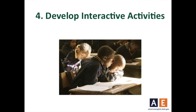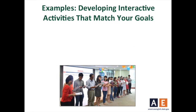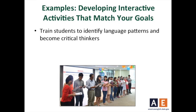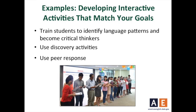Once you have your goals identified and sequenced, you can create interactive activities that match those goals. Developing interactive activities starts with training students to identify language patterns and become critical thinkers. You can do this through discovery activities — for example, asking students to examine writing in their field to decide if it includes both passive and active voice. You can also use peer response, which offers benefits such as increasing students' motivation and confidence with their writing, and also evaluating their own writing.